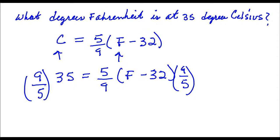Okay, so on the left-hand side, I can simplify this. 5 goes into itself once, goes into 35 seven times. Then I have 9 times 7, that's 63.